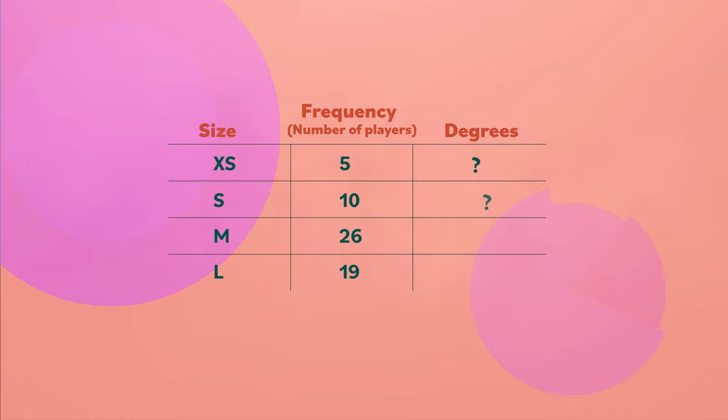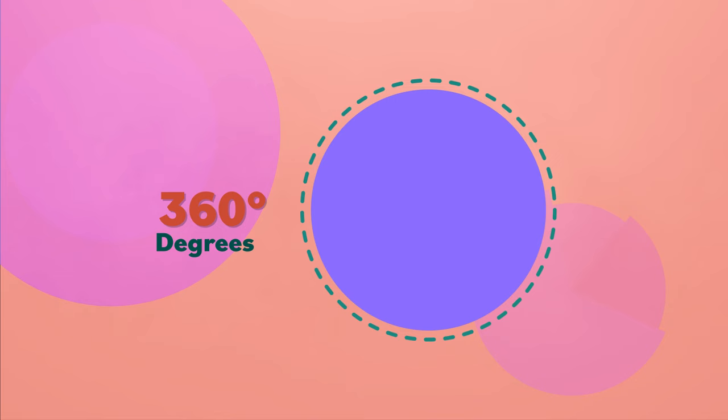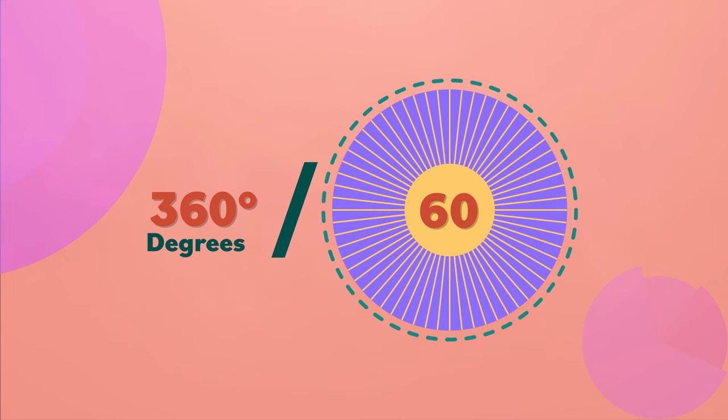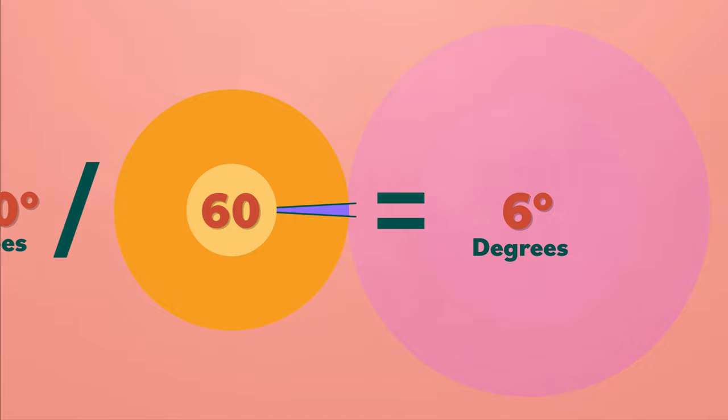She now needs to figure out how many degrees each size will make up in the circle of the pie chart. We know that a circle has 360 degrees. If 360 is divided by the total number of players, this tells us that one athlete equals six degrees.